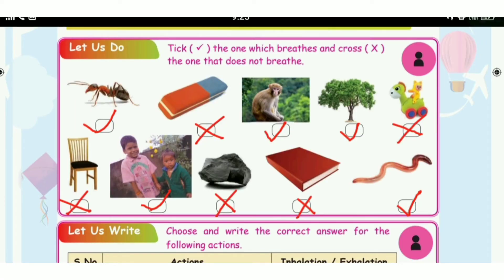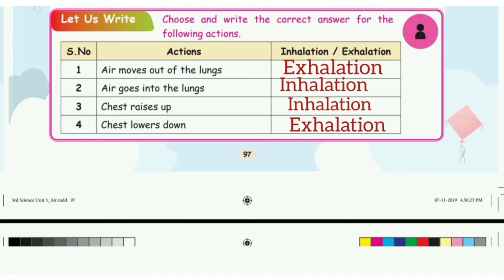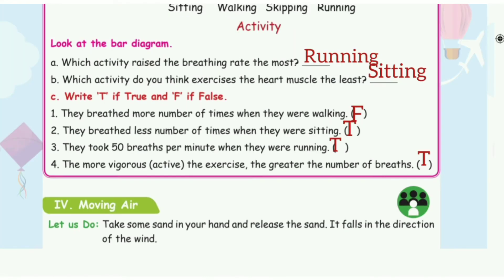Take the ones which breathe and cross the ones that do not breathe. Choose and write the correct answer for the following. First: air moves out of the lungs — the answer is exhalation. Second: air goes into the lungs — the answer is inhalation. Third: chest rises up — inhalation. Fourth: chest lowers down — exhalation. Then page number 98.